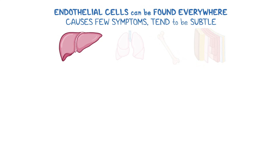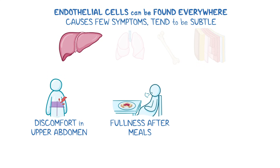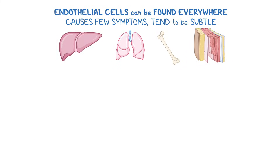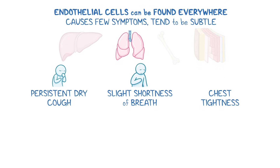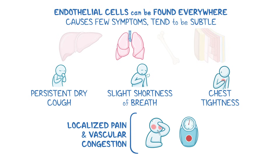For example, in the liver, it can cause discomfort in the upper abdomen, fullness after meals, or mild nausea. Whereas in the lungs, it can lead to persistent dry cough, slight shortness of breath, or chest tightness. Localized pain and vascular congestion are common, and generalized symptoms such as fever or weight loss can occur in association with tumor spread.